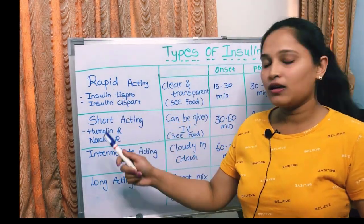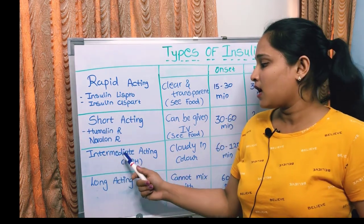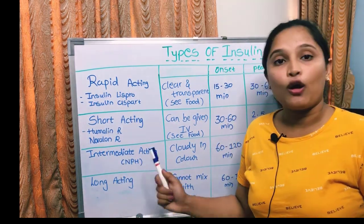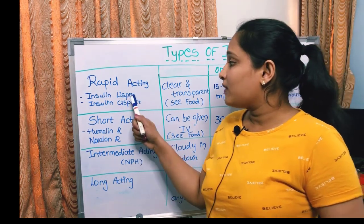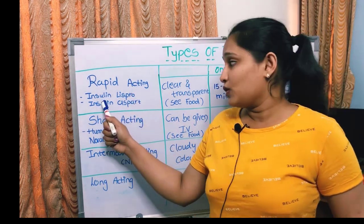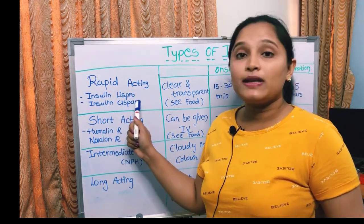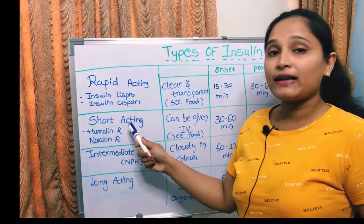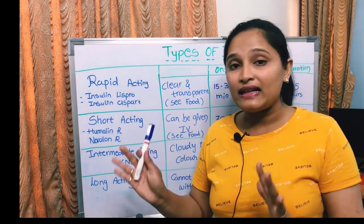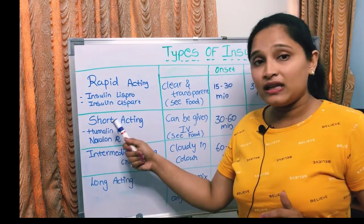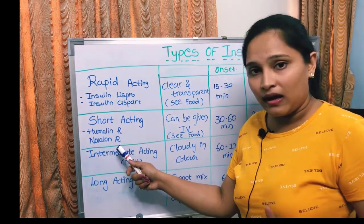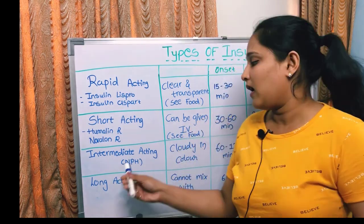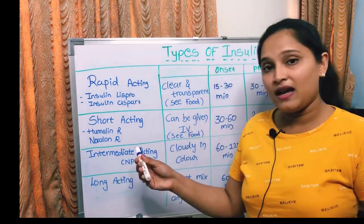There are four types of insulin: rapid acting, short acting, intermediate acting, and long acting. Rapid acting insulins include insulin Lispro and insulin Aspart. Short acting insulins end with the letter R — such as Humulin R and Novolin R. Intermediate acting insulins are the NPH insulins.